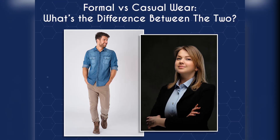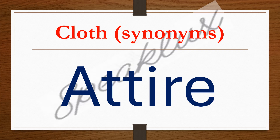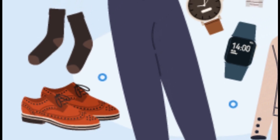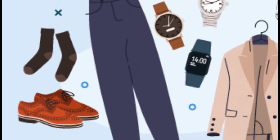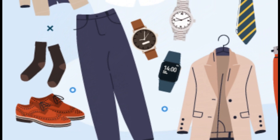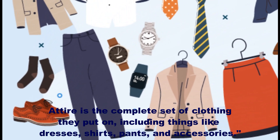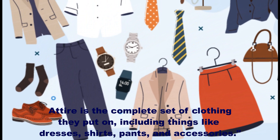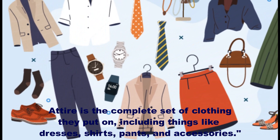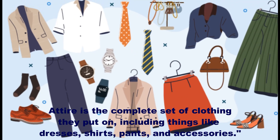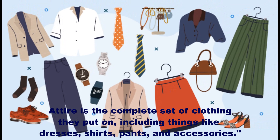I hope you understand the difference between formal and casual clothes. Now the next synonym for 'clothes' is attire. When you dress up for a function, the cloth you choose is your attire. Attire is a complete set of clothing you put on — it includes dresses, shirts, pants, and your accessories as well. So attire is your full getup when you dress up for a party.